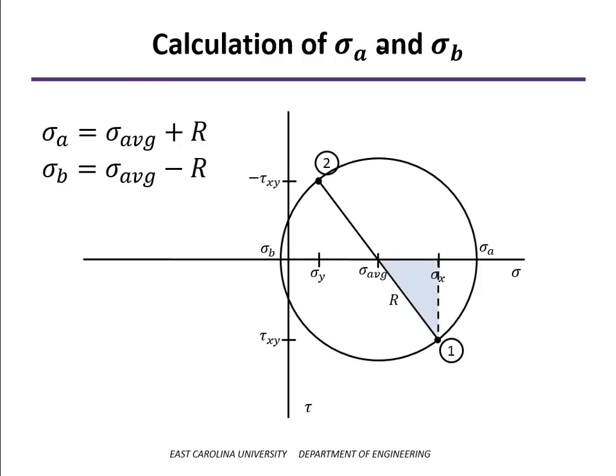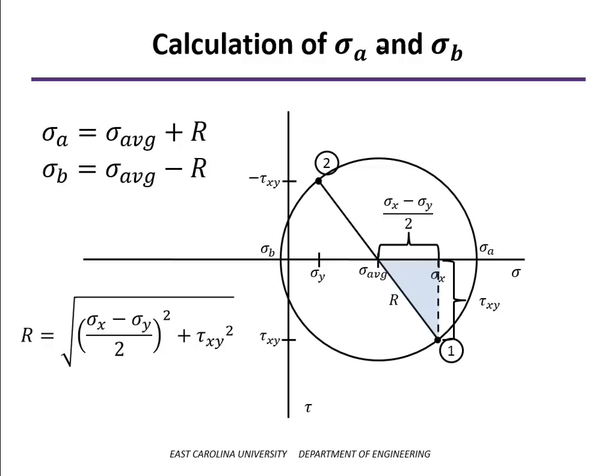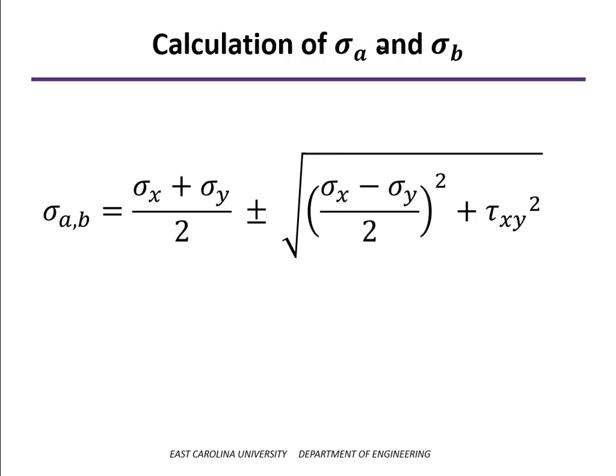To calculate the radius of the circle, we isolate this triangle. The radius is the hypotenuse of this right triangle. The first side is half of the difference between sigma x and sigma y; the other side is the shear stress tau xy. So the radius is the square root of the sum of the squares of the other two sides. What we've done graphically is reason out what the equations are for our two in-plane principal stresses, sigma a and sigma b. Drawing the Mohr circle is helpful because the equations fall out easily, rather than trying to memorize them.